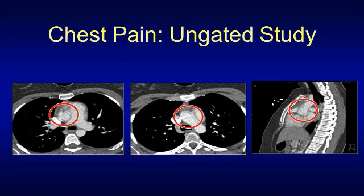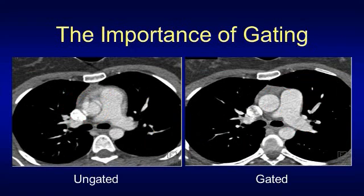We've all seen the pulsation artifact that looks like a dissection. In this case, it very well could be pulsation artifact, but she had a very strong clinical suspicion for dissection and we couldn't be absolutely sure that this wasn't a dissection. So she was imaged the following day with a gated study. Look at the difference — the case on the right: there is no artifact, there is no dissection, and there is no question.